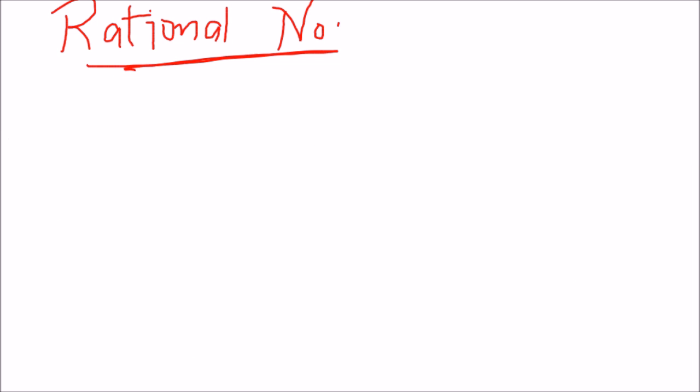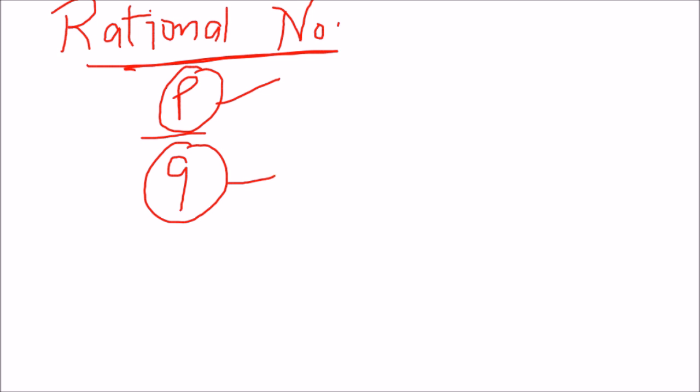A rational number is a number that can be written as a ratio — that's where its name comes from. In the sense of p upon q, it can be written as a fraction in which the numerator (the one on top) and the denominator (the one on the bottom) should both be whole numbers, except that q, the denominator, is not equal to zero.